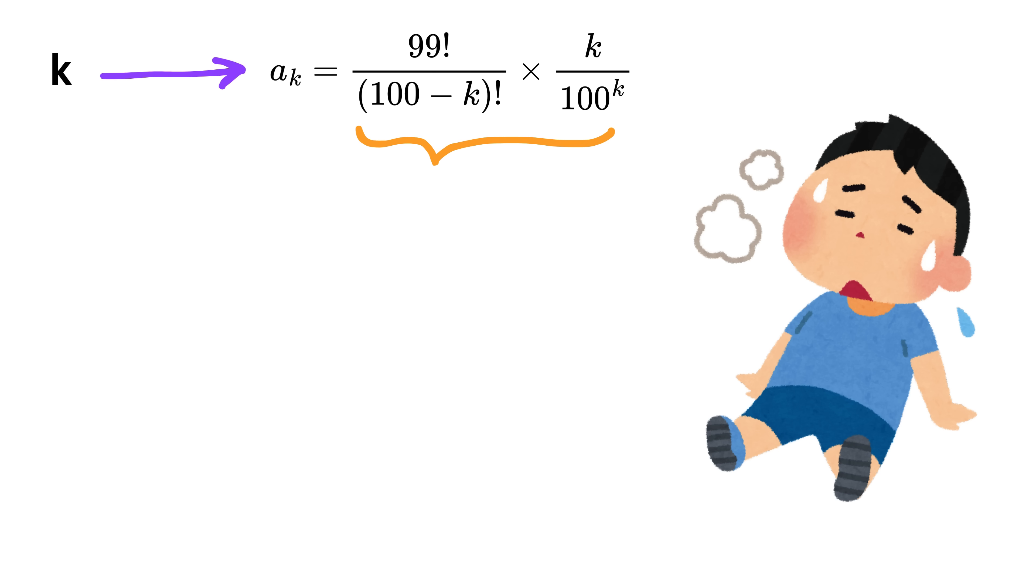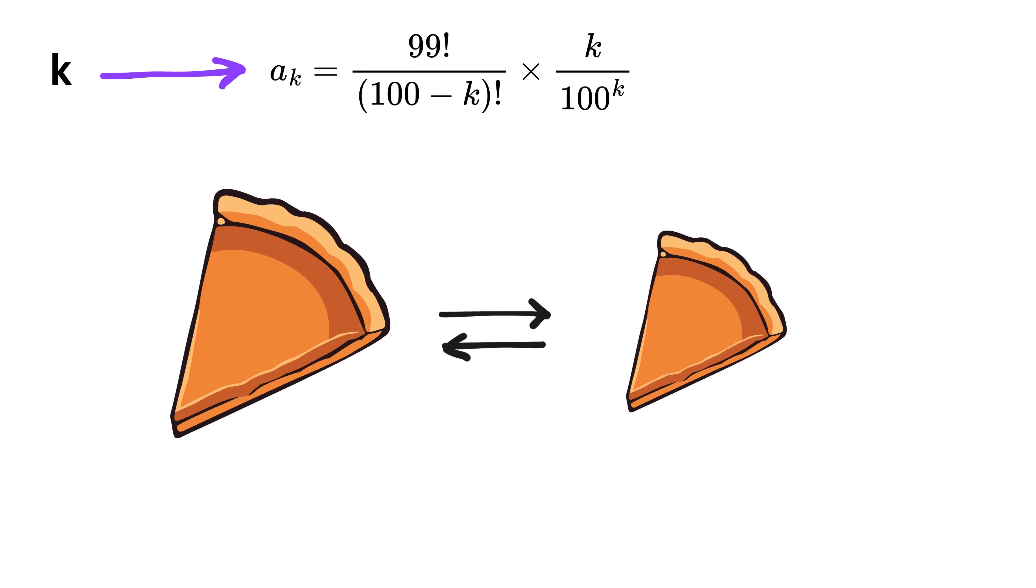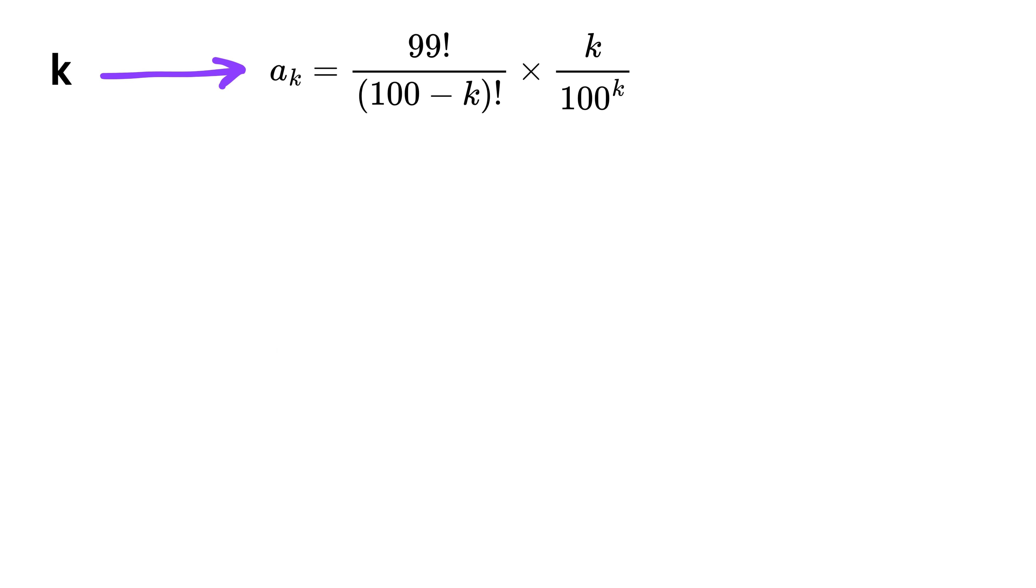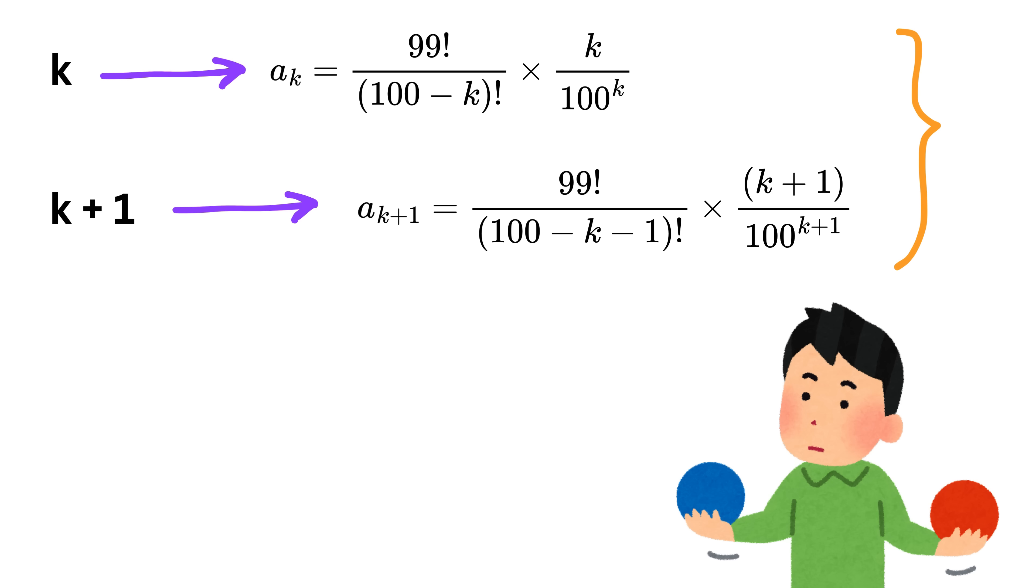Next, to understand whether the slice of pie sizes are growing or shrinking from one person to the next, we look at what the next person or person k plus 1 receives. We write the expression for person k plus 1 exactly the same way by just writing k plus 1 in the formula. Now we compare the two shares by dividing the share that person k plus 1 gets by the share of person k.